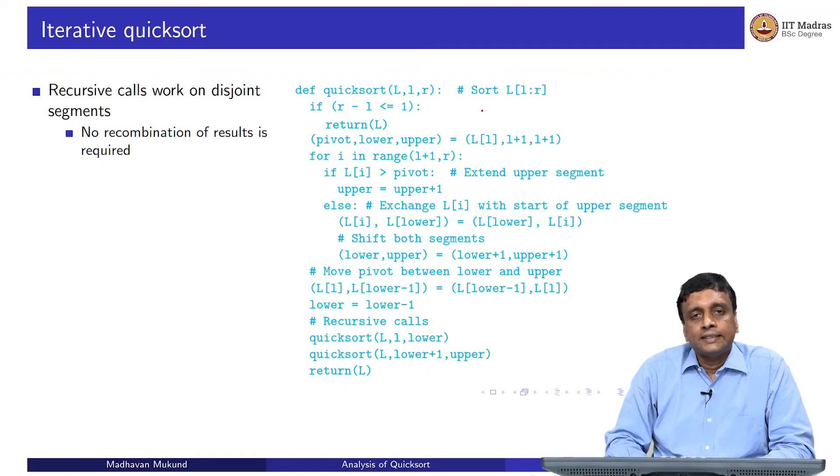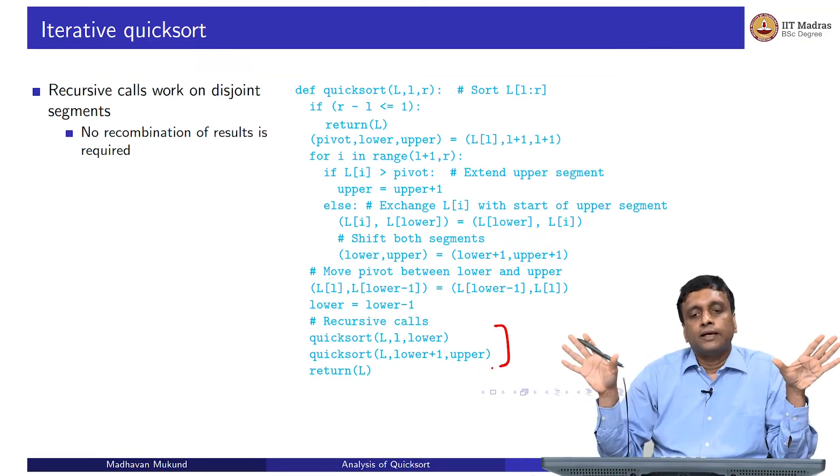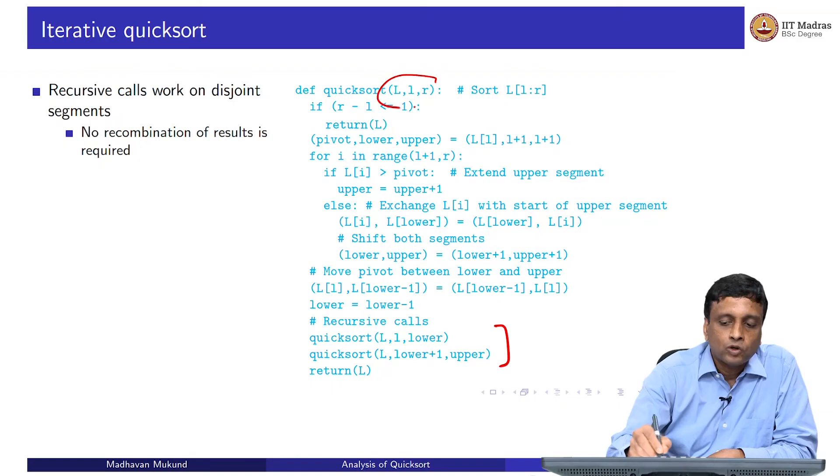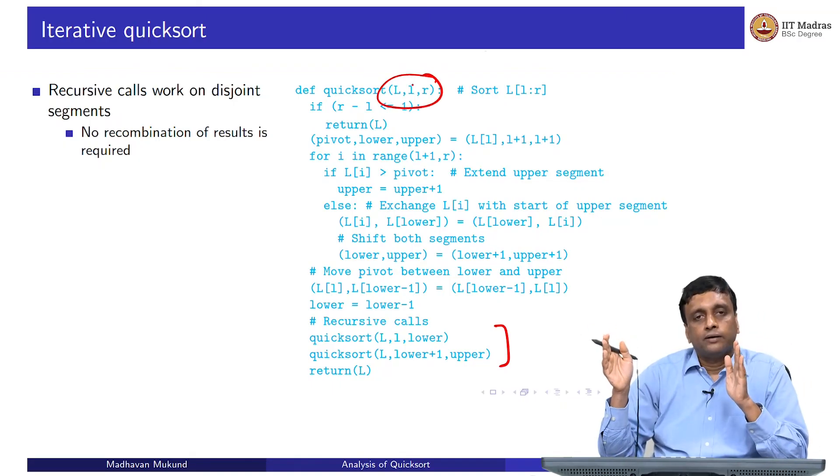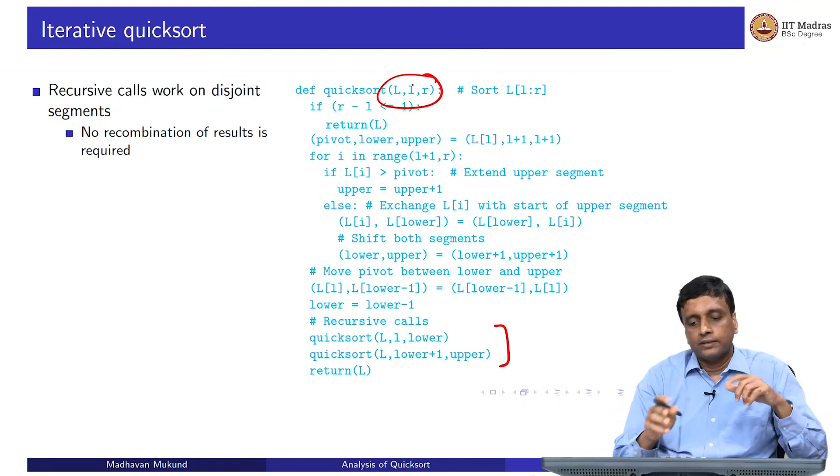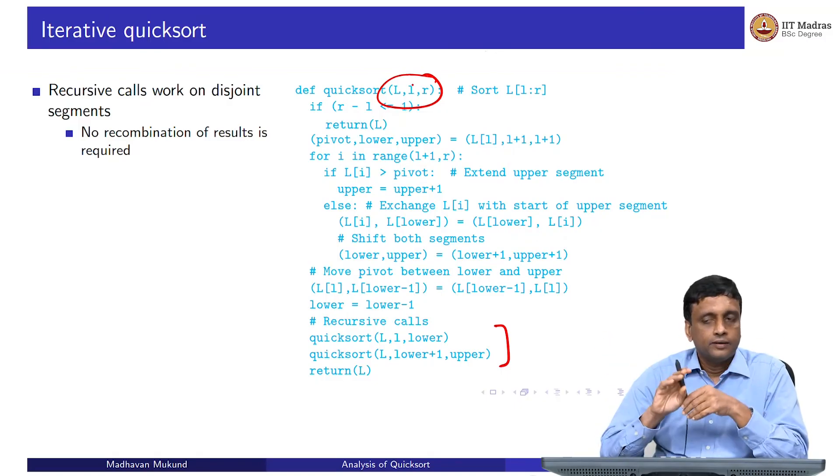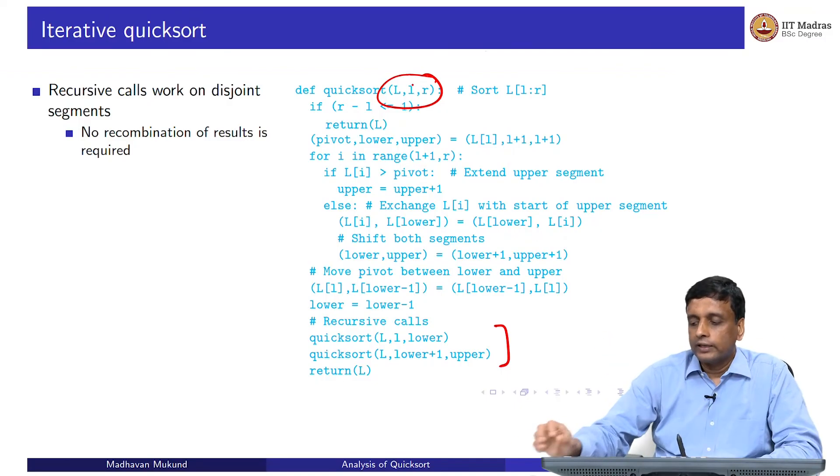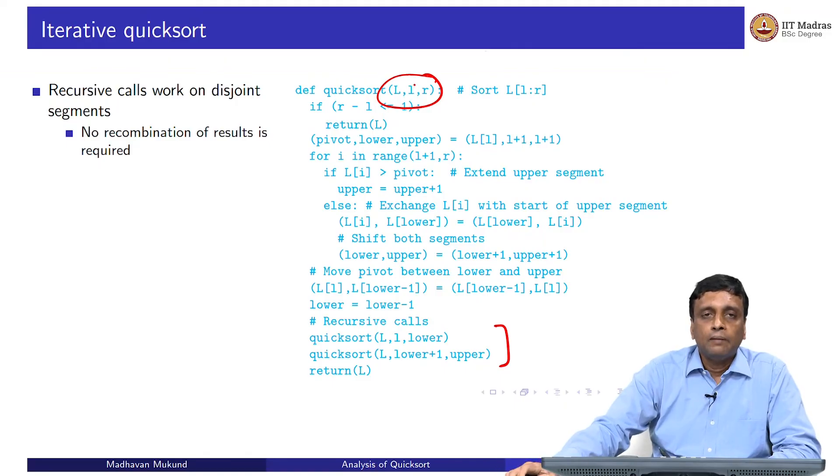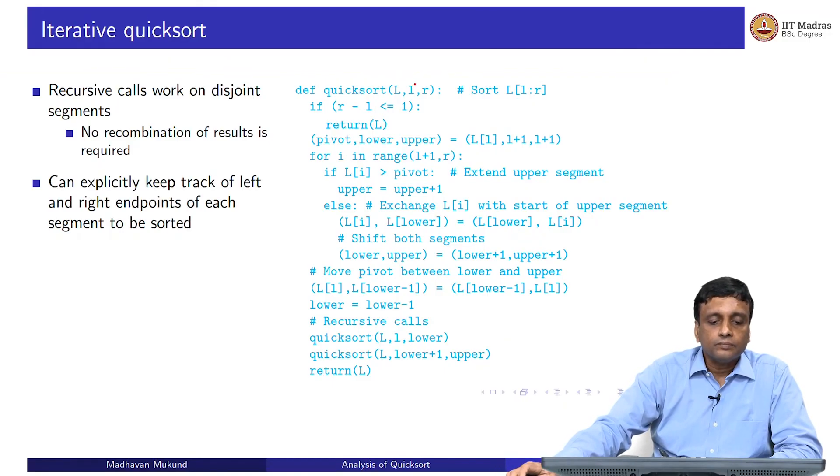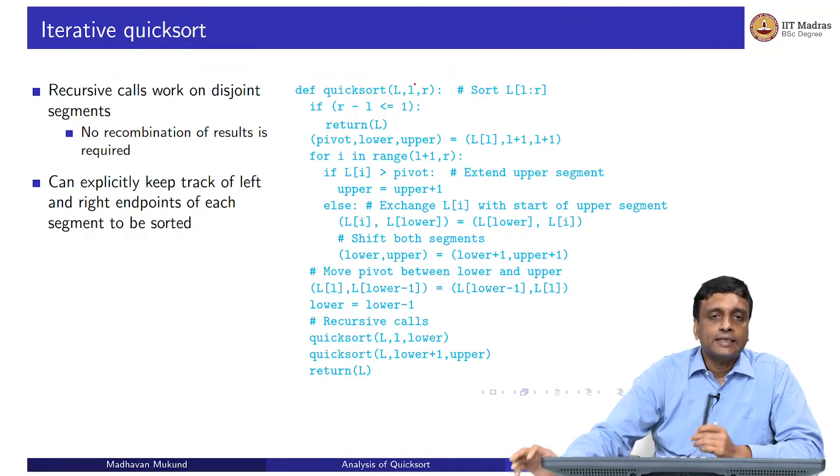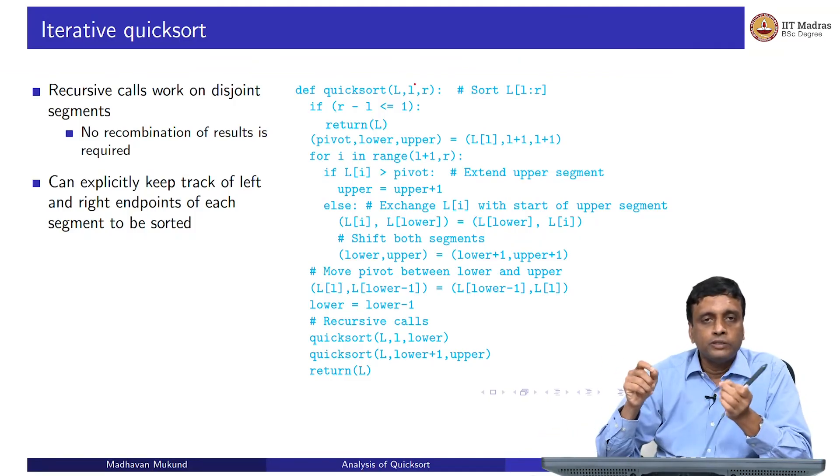We also mentioned iterative quicksort. These calls are happening on disjoint parts of the array. Since I am telling quicksort to work within a bounded interval from left to right, when I work on this interval, it does not influence anything else. I can always rewrite this code to work iteratively on each segment between l and r. You can convince yourself that this algorithm can actually be implemented iteratively.